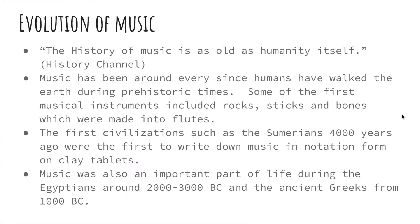The history of music is as old as humanity itself — that's from the History Channel. Music has been around ever since humans have walked the earth. During prehistoric times, some of the first musical instruments included rocks, sticks, and bones, which were made into flutes. The first civilizations, such as the Sumerians 4,000 years ago, were the first to write down music in notation form on clay tablets — a lot different than the tablets we use today. Music was also an important part of life during the Egyptians around 2,000 to 3,000 BC, and then the ancient Greeks from 1,000 BC, who were some of the first to create string instruments.